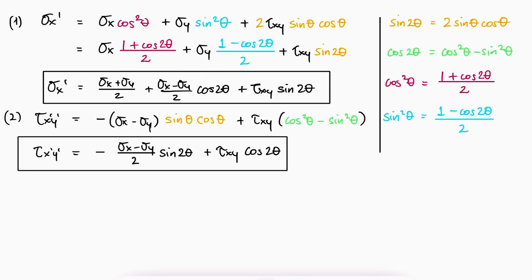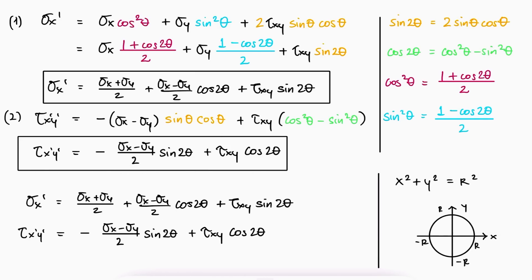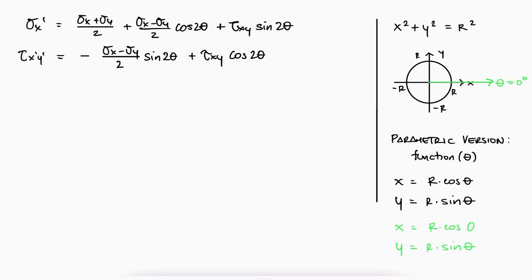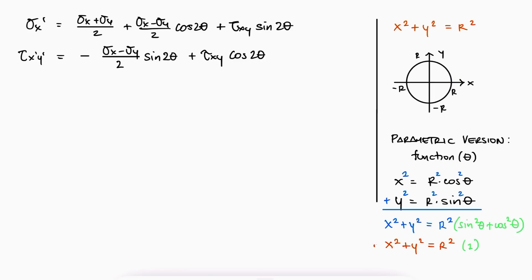If you remember from simple algebra, the equation of a circle is x squared plus y squared equals r squared. The parametric equations of a circle, which depend on a parameter — in this case the angle theta — would be x equal to r cosine of theta and y equal to r sine of theta. For example, for theta equal to zero, x would be equal to r and y would be equal to zero. To go from these parametric equations to the Cartesian equation of a circle, we square both sides and add them together. This can always be done as long as the axes — in this case x and y — are perpendicular to each other.